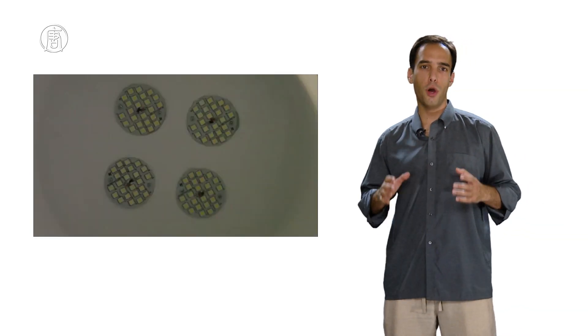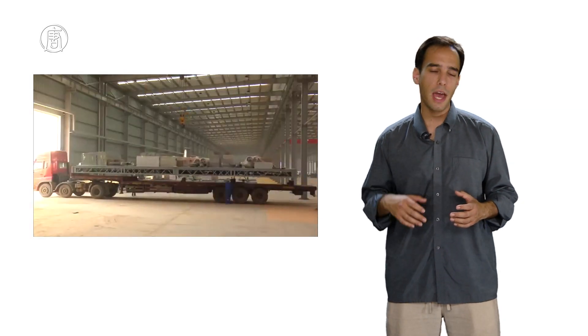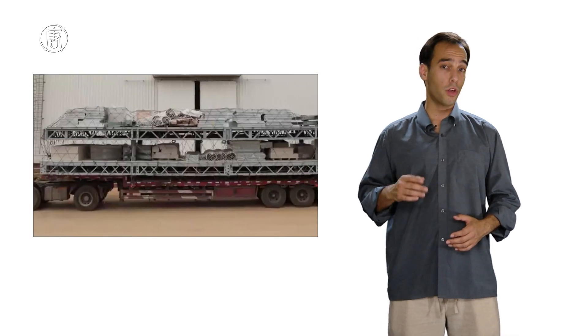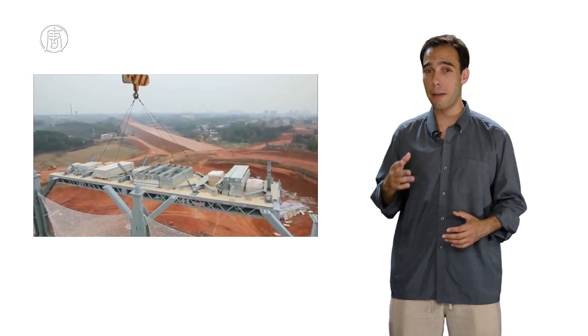Using this method, Broad was able to build a 30-story hotel in just 15 days. After its completion in 2012, the hotel passed the national safety test and could supposedly withstand a 9-magnitude earthquake.